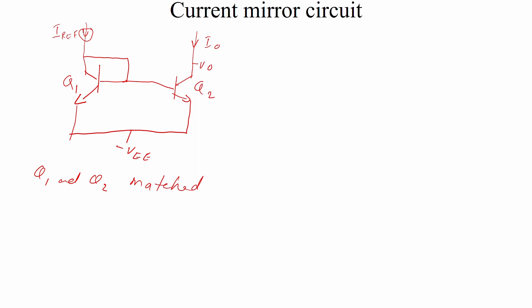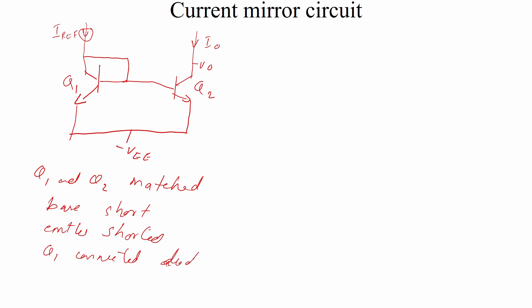When we fabricate in IC, Q1 and Q2 are matched. In this case, the base is shorted and the emitter is shorted. The emitters of both Q1 and Q2 are shorted. Q1 is connected as a diode-connected transistor.